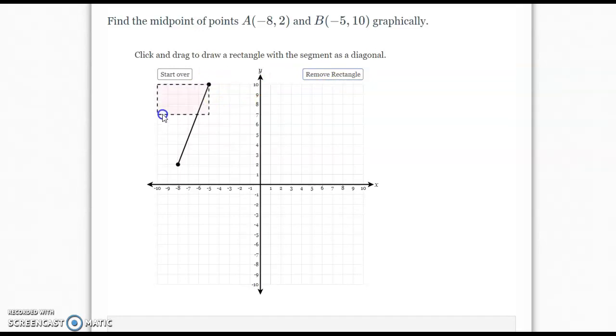Now remember, the rectangle has to be on the points. Like, this would be wrong. So let me remove it. It has to have the diagonals like this. The diagonal has to be in the rectangle.